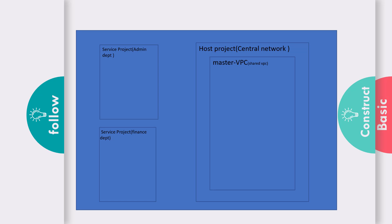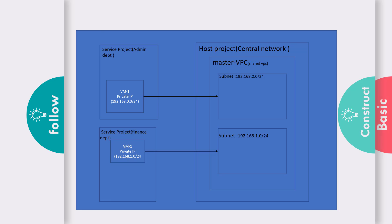These virtual machines should be associated with the shared VPC within the host project. I will create a master VPC as the shared VPC, and within it I will create two subnets. After that, I will associate the service projects with the master VPC and create two virtual machines. These VMs will have private IP addresses linked to the subnet IPs of the shared VPC. Let's look at a demo on how this is done.